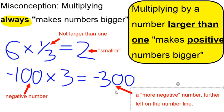So it does get a little bit hairy when you start introducing positives and negatives. So we can't always say that multiplying makes a number bigger.